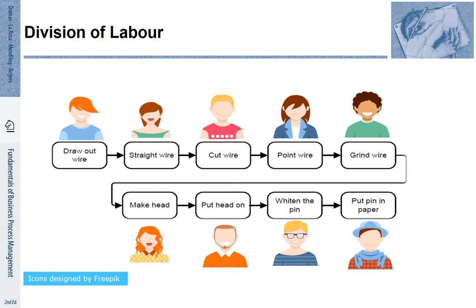It's not only enough to split up the work — we also need to think about how we reintegrate the different steps and the different results from these steps. For that reason, business process management is so important. When division of labor is about splitting up the work, it is business process management that gives us tools and techniques for integrating these different steps.